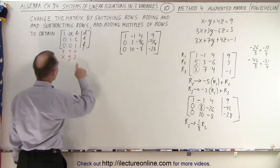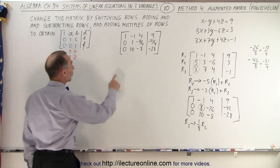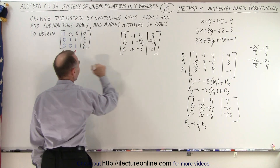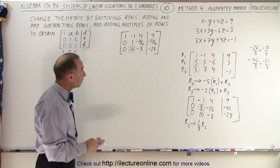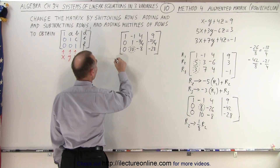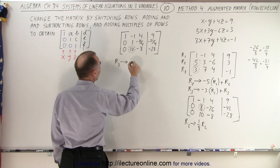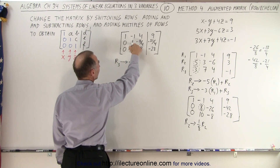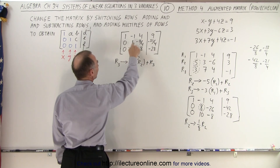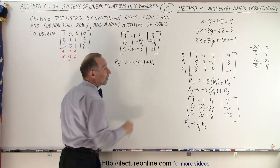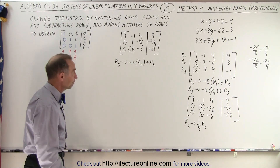The pivot in Row 2 is now 1. Next, I need to take the 10 in Row 3 and turn it into a 0. To do that, I take Row 3 and replace it by negative 10 times Row 2 added to Row 3. Negative 10 times 1 is -10, plus 10 gives 0 — that's what I want. The rest of Row 3 will change, but I don't care what it changes to yet.